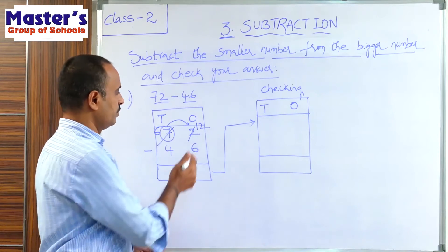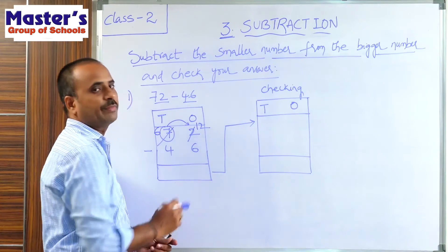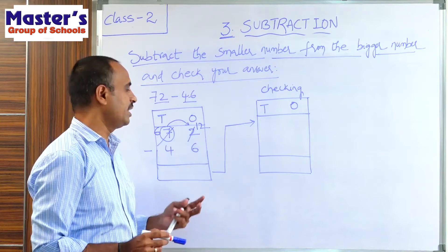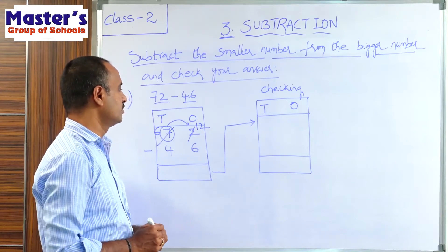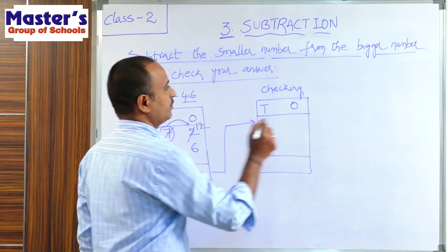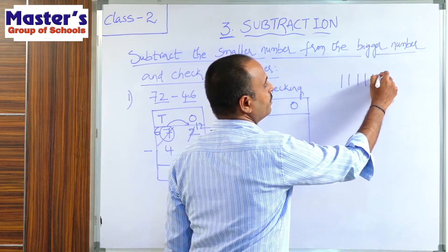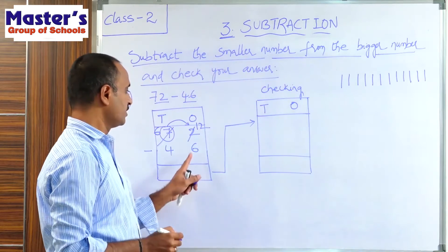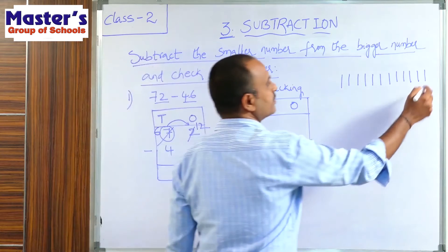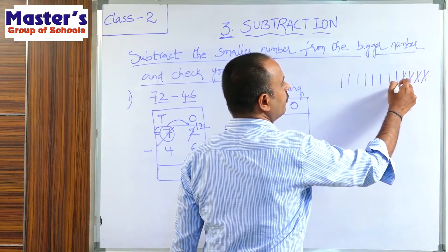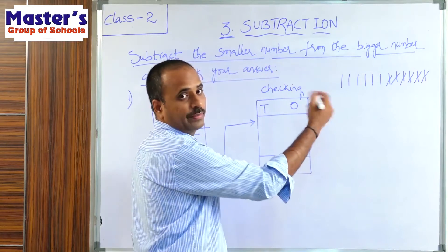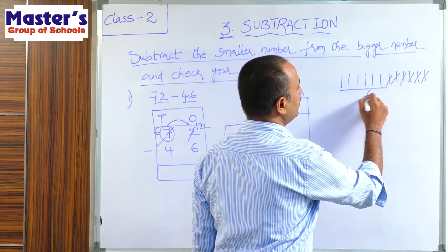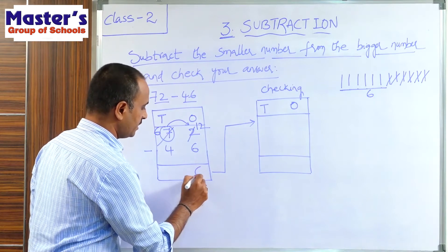Now do the subtraction: first number is 12, second number is 6. Draw 12 lines: 1, 2, 3, 4, 5, 6, 7, 8, 9, 10, 11, 12. Strike out 6 lines: 1, 2, 3, 4, 5, 6. Count the remaining lines: 1, 2, 3, 4, 5, 6. There are 6 lines left. The answer is 6; write 6 in the 1's place.